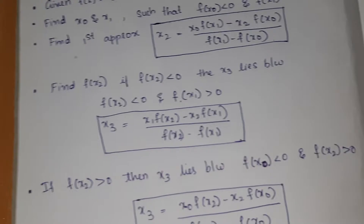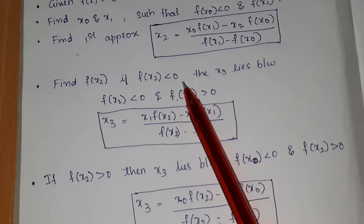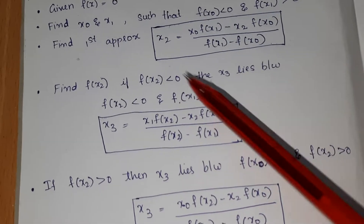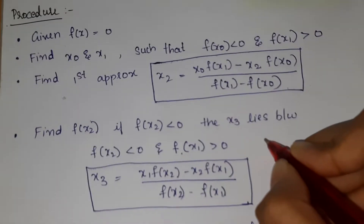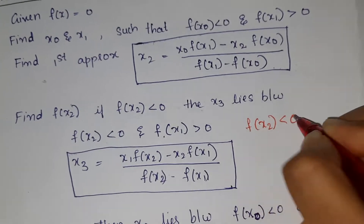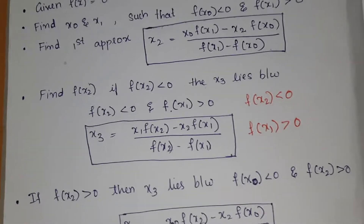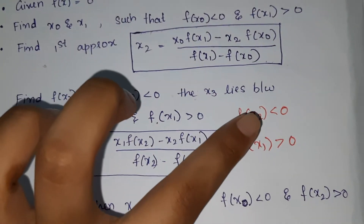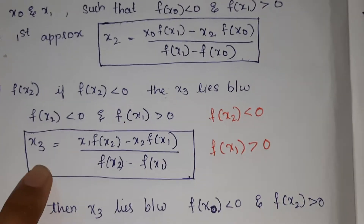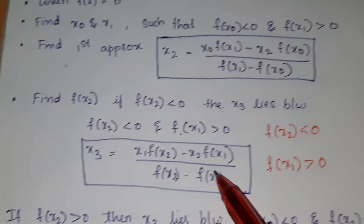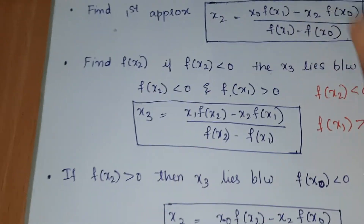Now find f(x2). If f(x2) < 0, then x3 lies between x2 and x1, since f(x2) < 0 and f(x1) > 0. So we take x1 to find x3. The formula to find x3 will use x2 and x1 in that case.